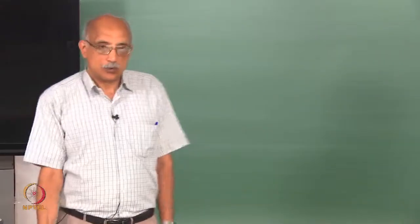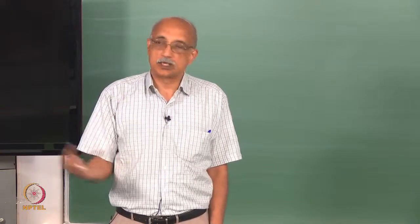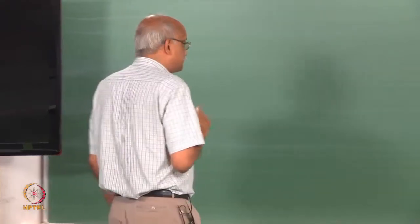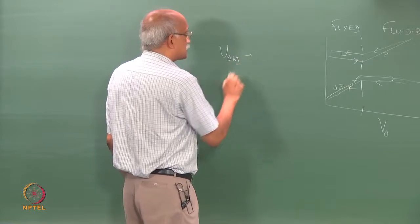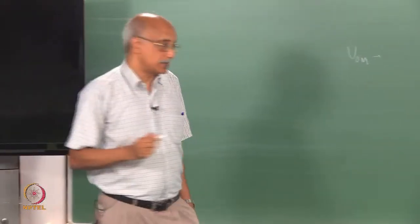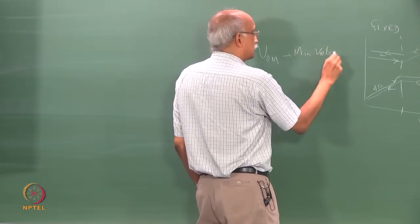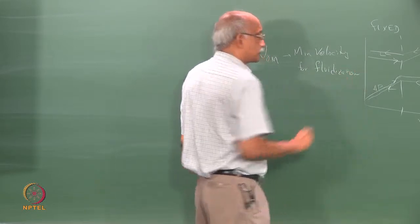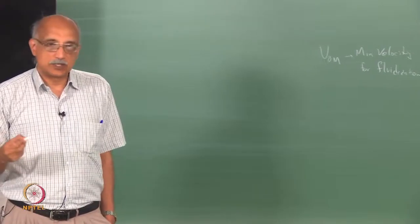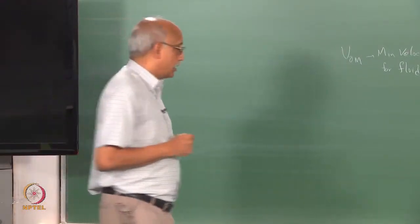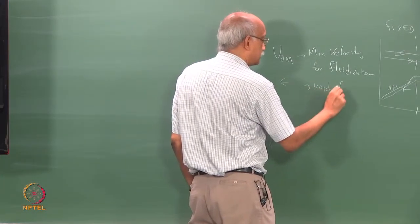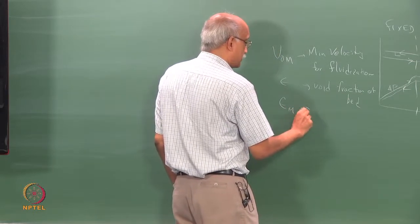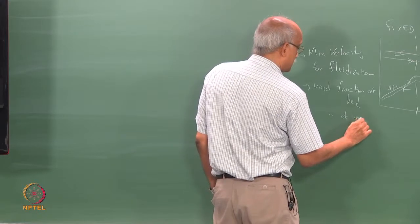In a lab experiment on fluidized beds, you check for onset of fluidization by fully fluidizing and then changing conditions back so fluidization is absent. The minimum velocity for onset of fluidization, V-zero-M, is an important parameter that you need to estimate for a given set of operating conditions. Another important parameter is epsilon, the void fraction of the bed, and there is an epsilon-M which is the void fraction at incipient fluidization.